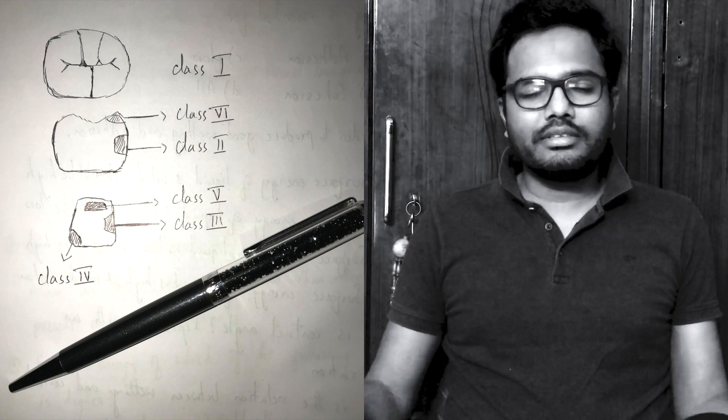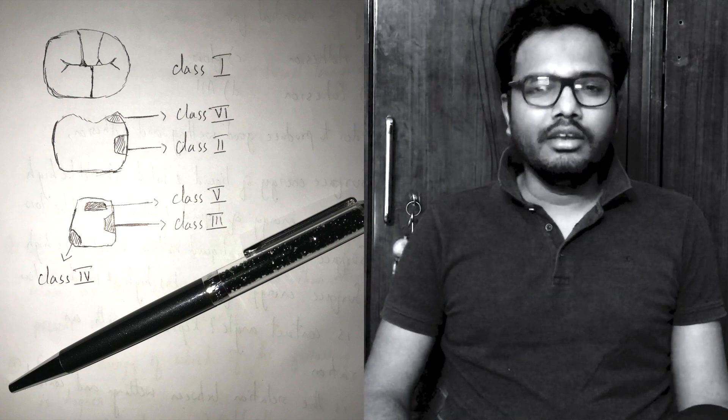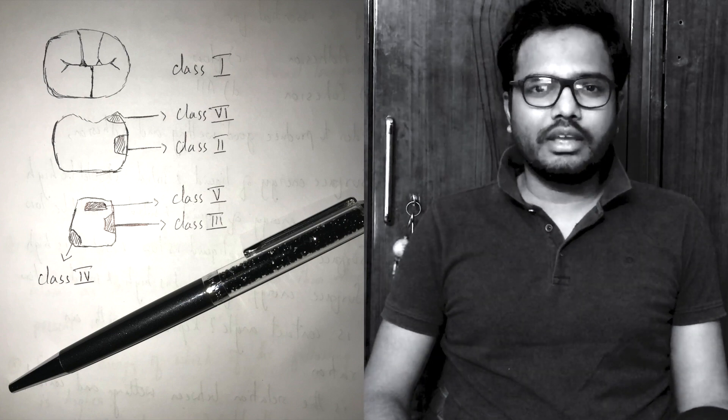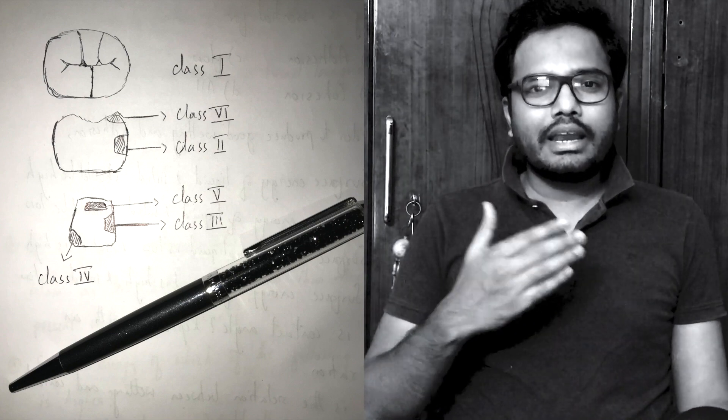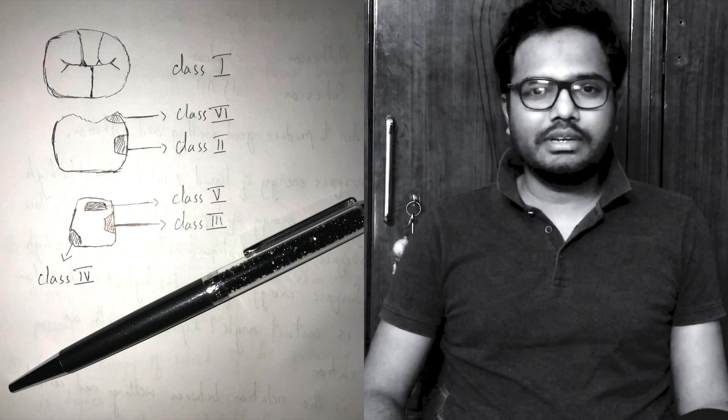So we have this classification given by Greene Vardiman Black way back in 1908. So based on this specific classification, you can say that class 1, class 5 and class 6 involve any of the teeth in oral cavity.